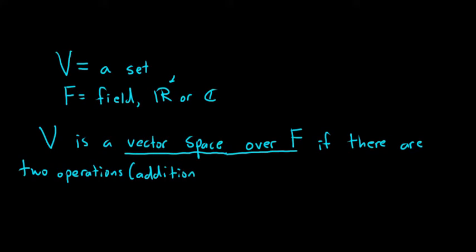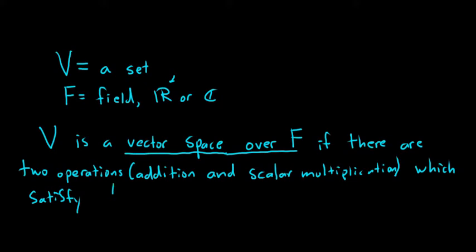And the other is called multiplication or scalar multiplication. I'll emphasize scalar. Right, there is no vector multiplication. So V is a vector space over a field F if there are two operations, addition and scalar multiplication, which satisfy the following axioms. These are called the axioms of a vector space.